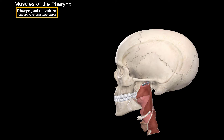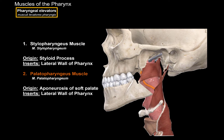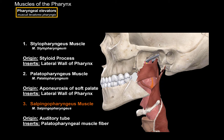The next group is the pharyngeal elevators. The constrictors constrict the pharynx, while the elevators elevate the pharynx when you swallow. The first is the stylopharyngeus muscle, which originates from the styloid process and inserts at the lateral wall of the pharynx — contracting to pull and elevate the pharynx. The next is the palatopharyngeus muscle, which originates from the aponeurosis of the soft palate and inserts at the lateral wall of the pharynx. Finally, the salpingopharyngeus muscle originates from the walls of the auditory tube and inserts into the fibers of the palatopharyngeus muscle — when you swallow, it also helps open up the auditory tube.